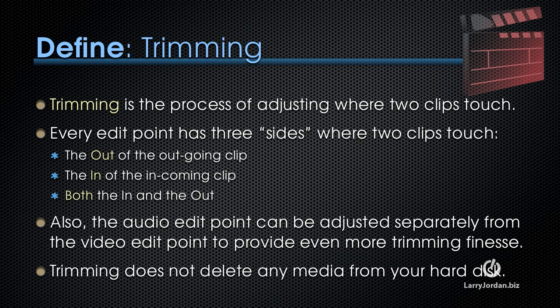Trimming is the process of adjusting where two clips touch. Every edit point has three sides where these two clips touch: there's the out of the outgoing clip, the in of the incoming clip, and both the in and the out. Trimming involves adjusting one of those three points.